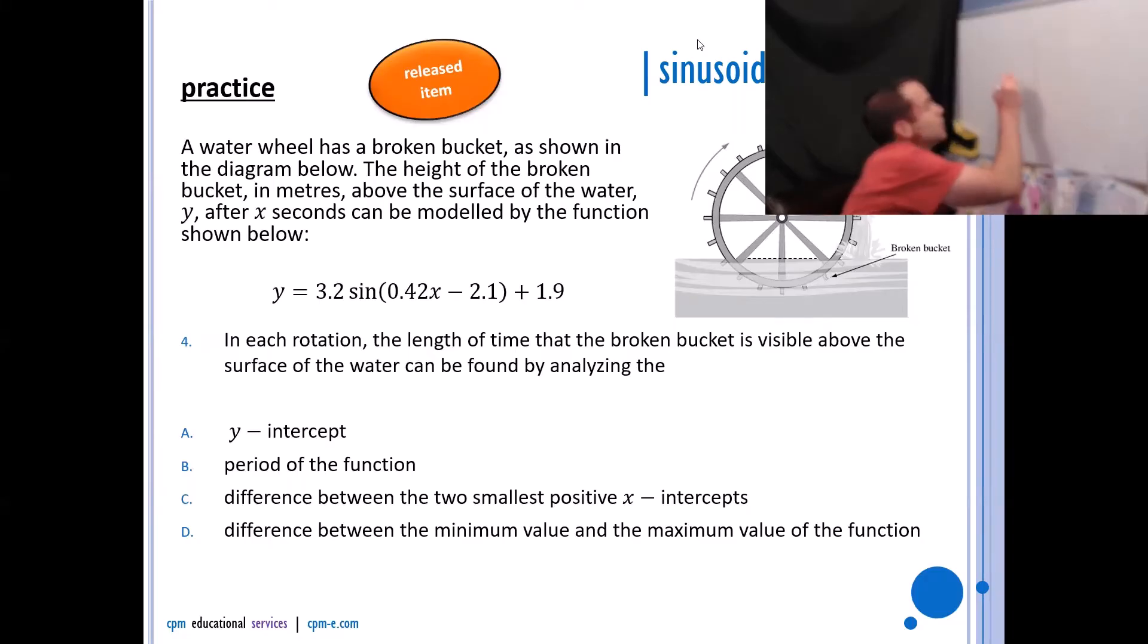When you do so, you're going to get something that looks like this. So at this point here, this is where the bucket surfaces above the water. This is the first time the bucket is visible, and then at this point here that would be the last time the bucket is visible because at that point it's going to go down below the water. So this distance from there to there is the time that you would see the bucket above the water, and so that would be the difference between the two smallest positive x-intercepts. So the answer there would be c.